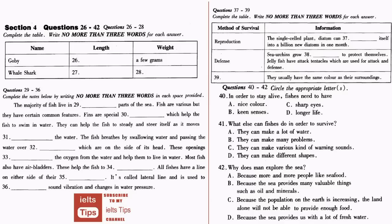The single-cell plant, the diatom, can multiply itself into a billion new diatoms in one month. Certain sea animals have defensive devices that help them to survive. Sea urchins, for example, grow spines to protect themselves. The sea anemone and jellyfish have poisonous tentacles, which are used for attack and defense.